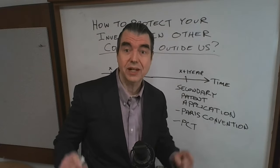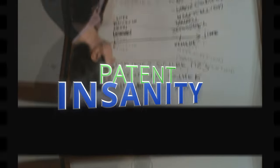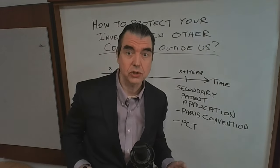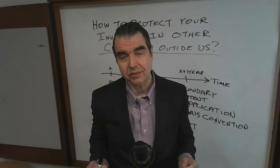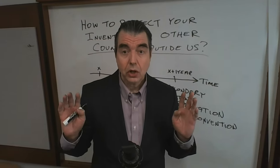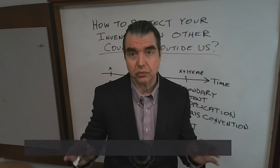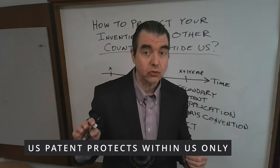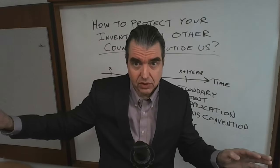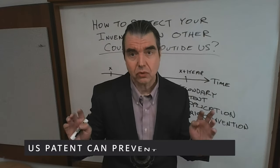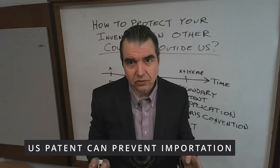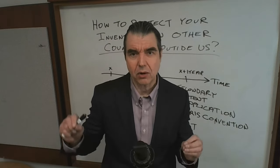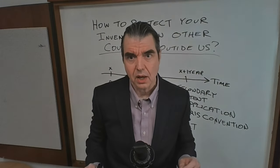Let's talk about how to protect your invention outside of the United States. For multinational invention protection, you're going to need to file patents outside of the United States. A United States patent only covers the making, using, and selling of your invention within the boundaries of the United States. A US patent does give you the ability to prevent others from importing your invention into the United States, but it doesn't give you any protection for people making, using, and selling your invention in other countries.